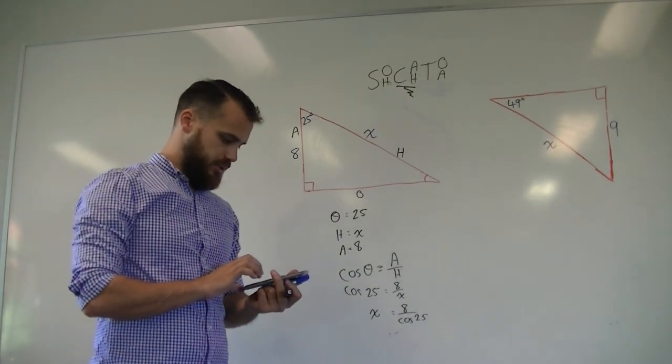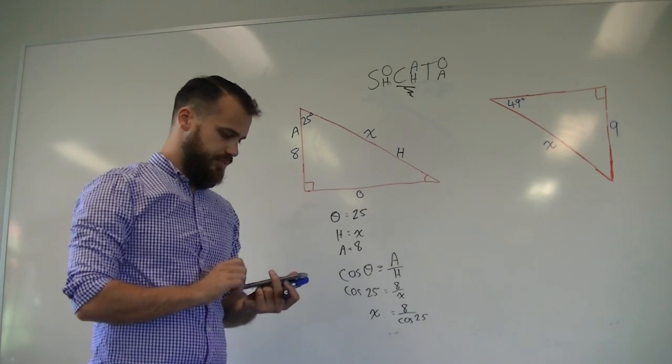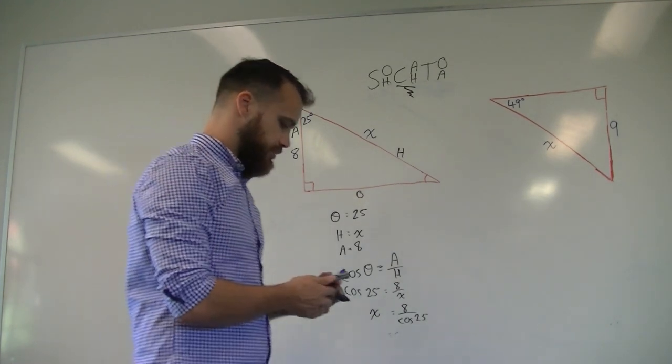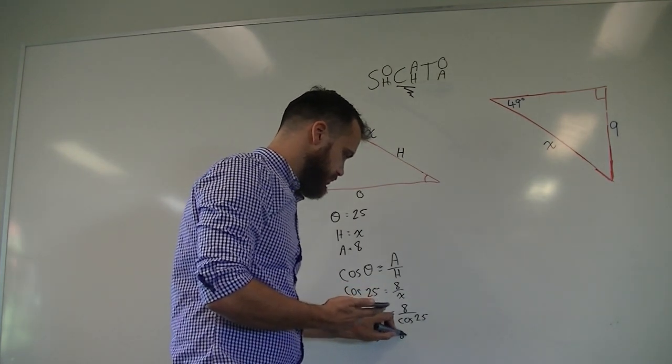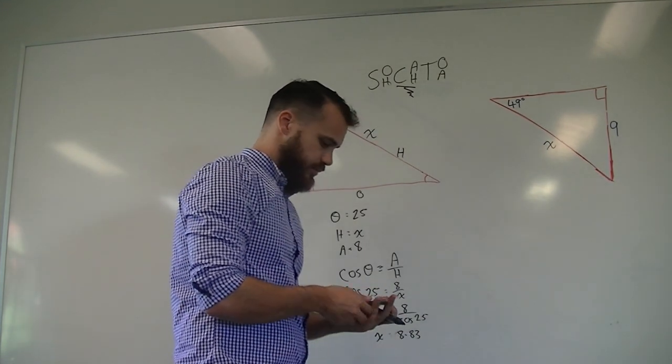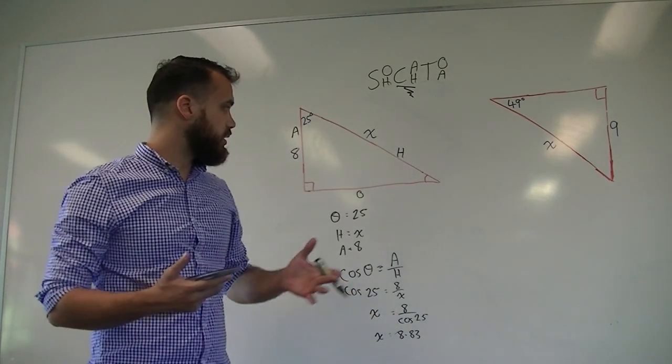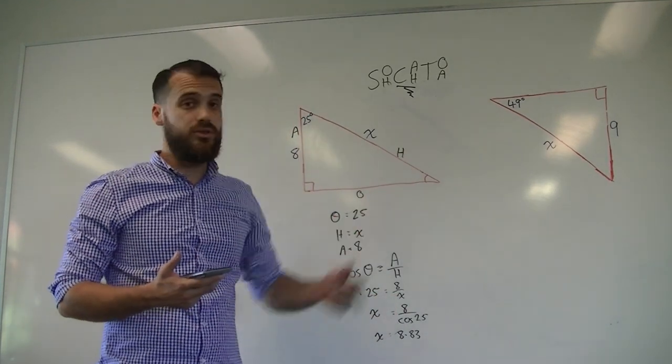8 divided by cos 25. I'm going to do it all in my mind. And we get an answer of 8.83. Okay. That's pretty much it. We'll run through this one really quickly.